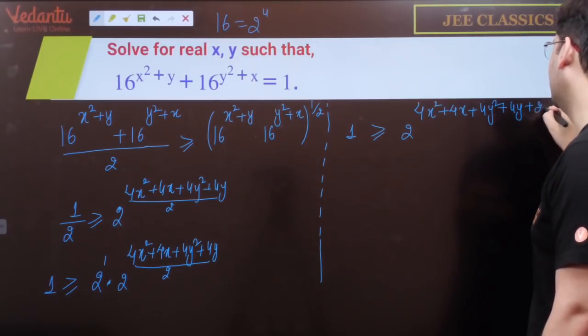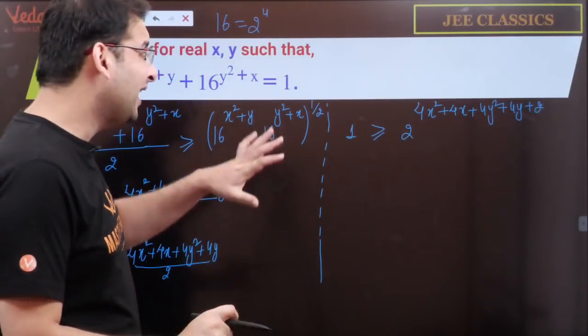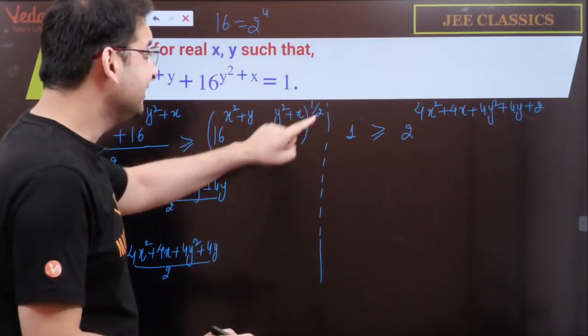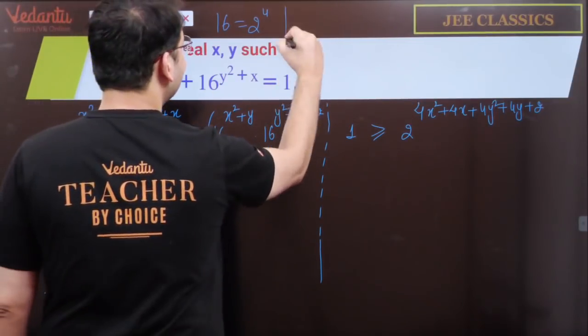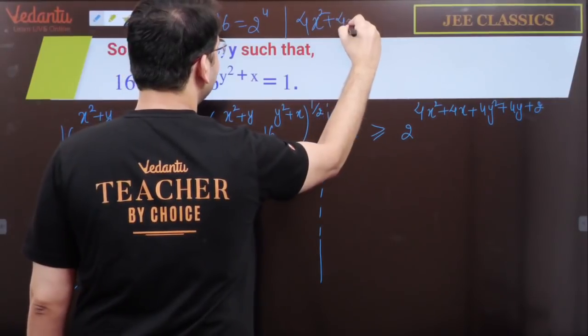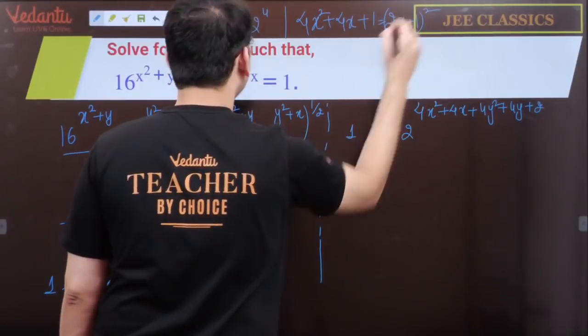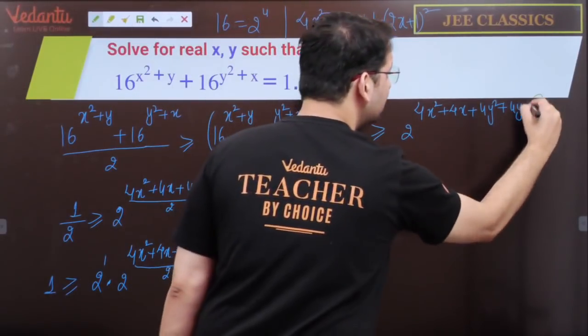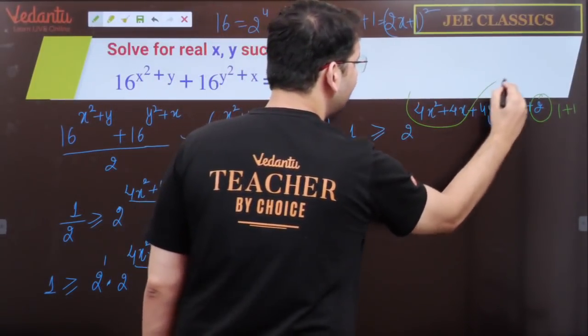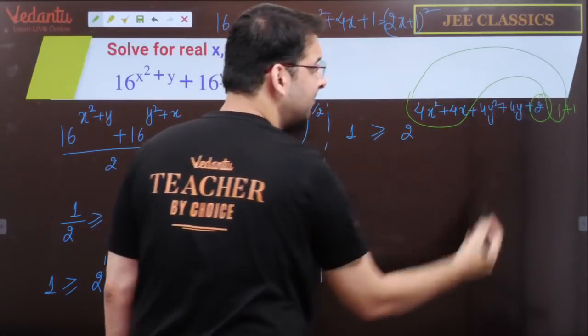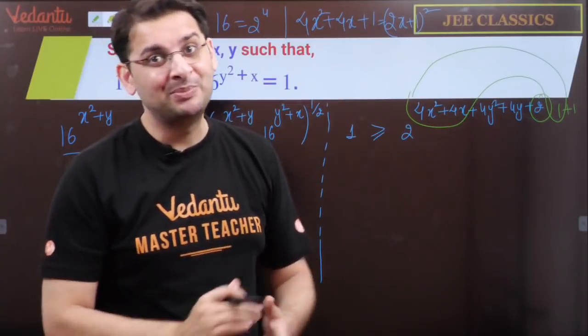Now we have to observe certain things. This is telling us to complete the perfect square, because we know 4x²+4x+1 is a perfect square of (2x+1)². So split this 2 as 1+1. 4x²+4x+1 will be a perfect square. Likewise 4y²+4y+1 will be another perfect square.